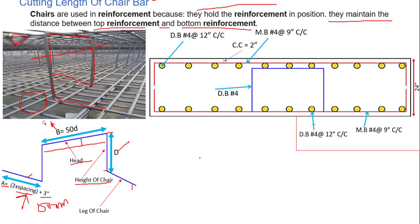The spacing used in the leg formula refers to the spacing of the main bar at the bottom. Here is basically the cross section of our footing, and this is our main bar in the cross section. For A, we need to take the spacing of this main bar. For example, if spacing is 9 inches, then A = 2 × 9 + 3 inches.